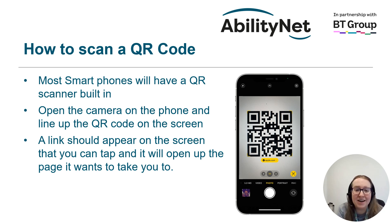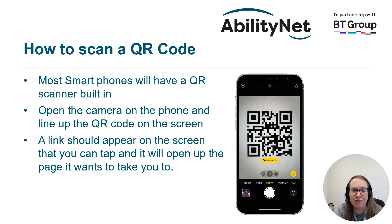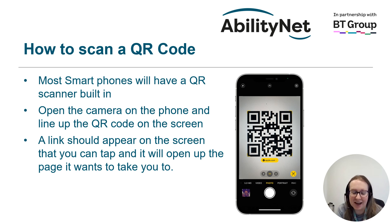So how do we scan a QR code? Most smartphones will have a QR scanner built into them already. To use these, you open up the camera on your phone, line the camera up with the QR code on the screen, and then a link should appear that you can tap to open up the page you want. On the image on this slide you can see the QR code on screen and the link has come up in a yellow box that you would tap to access the site.